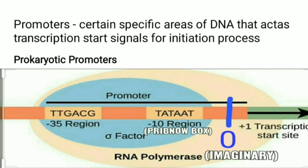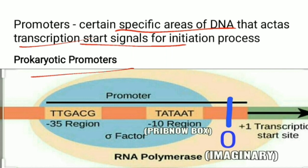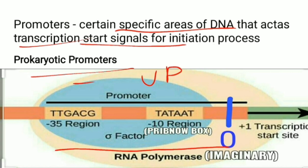Promoters are specific areas of DNA that act as a start signal for the initiation of transcription. Regarding the zero point — this is an imaginary point. All the region to the left of the zero point is known as upstream and is denoted by a negative sign, and all the region to the right is known as downstream and is denoted by a positive sign.